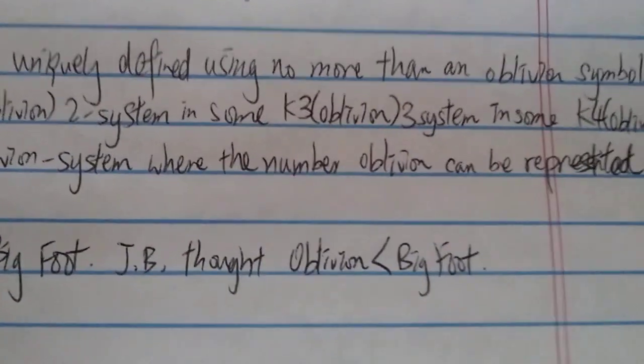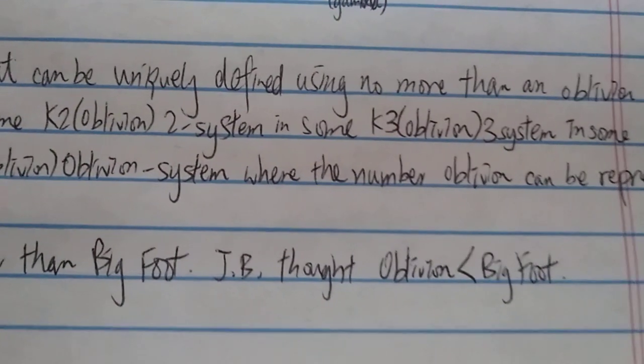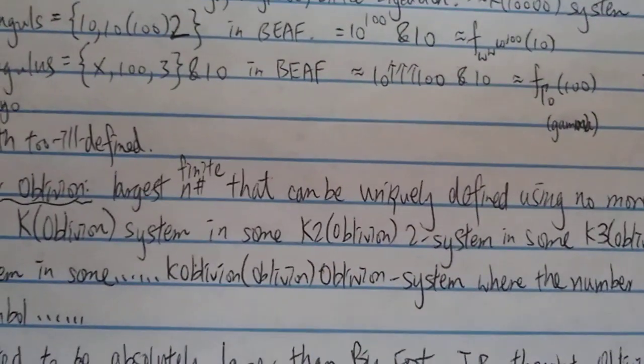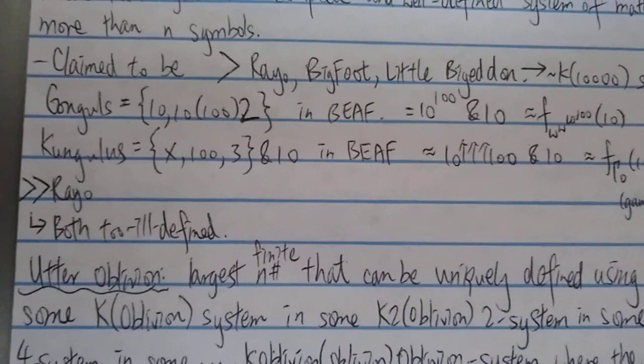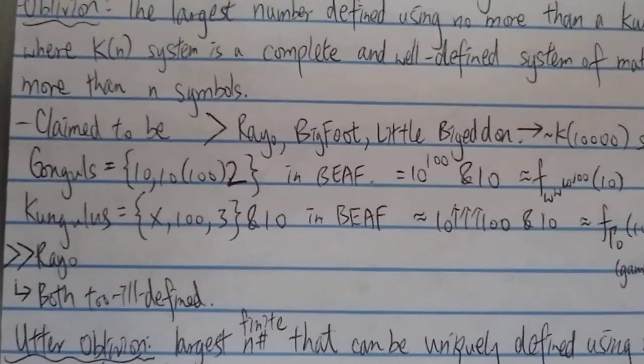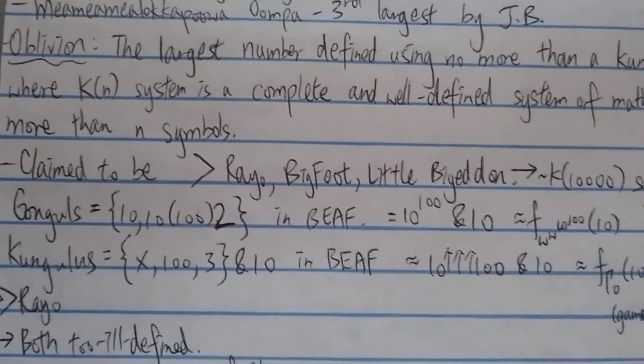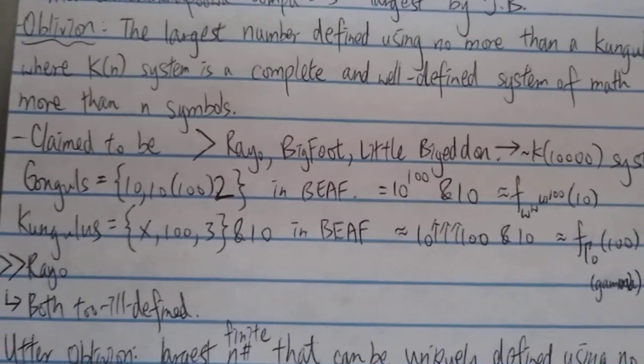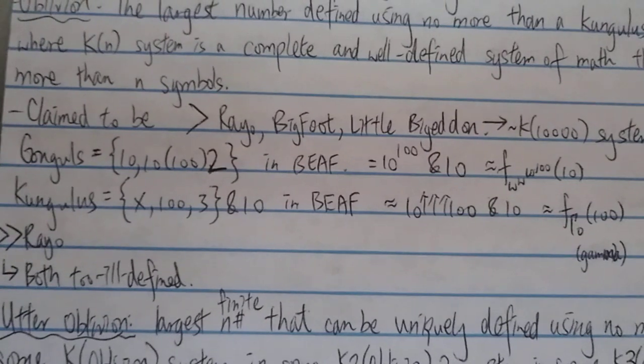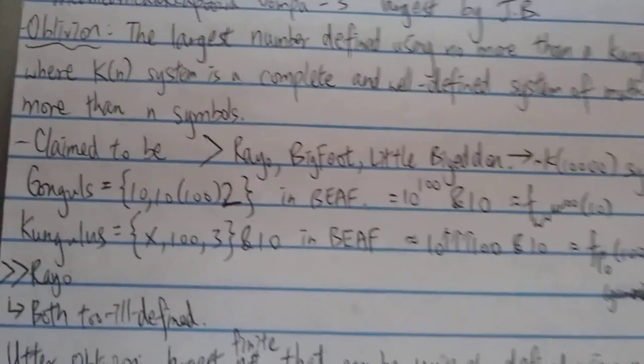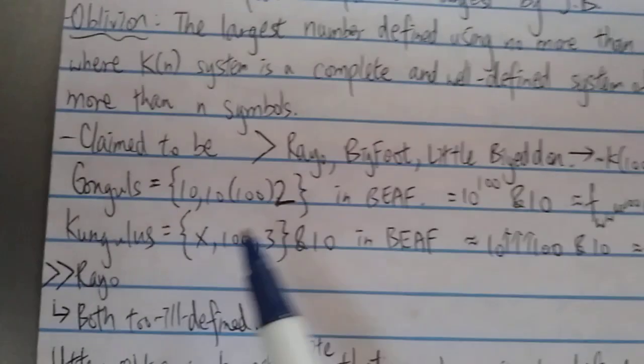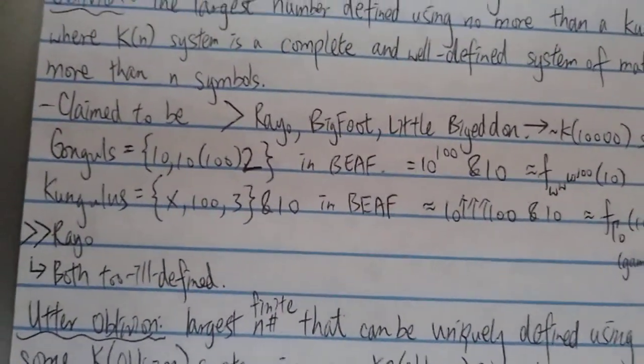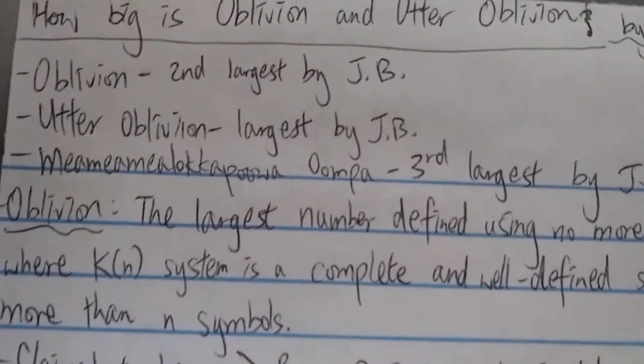But since Bigfoot is also ill-defined, so this comparison doesn't make any sense anyway. And basically anything bigger than Rayo can is kind of defined this way: the biggest number that can be created with n number of symbols in some n language. And the n language, the thing here is, is not well-defined, therefore the whole thing is not well-defined. And even this number itself is not well-defined anyway, which is being used in oblivion.